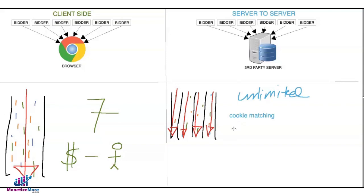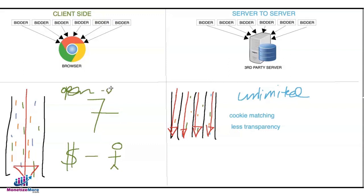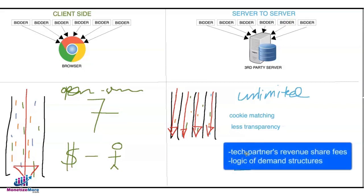The next drawback is less transparency. On the client-side header bidding, the codes are open source, which means anyone can access the codes and check for any impropriety. In S2S, it's like a black box where publishers are unable to confirm tech partners' revenue share fees or logic of demand structures.